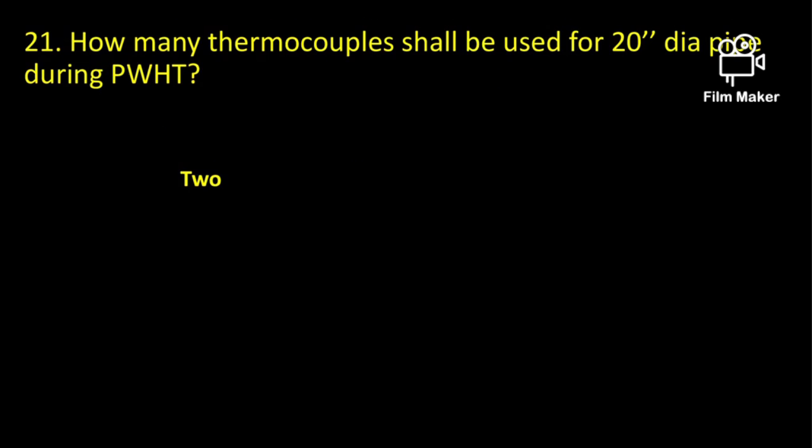How many thermocouples shall be used for a 20-inch diameter pipe during post weld heat treatment? A minimum of 2 thermocouples shall be used for 20-inch diameter pipe for post weld heat treatment.